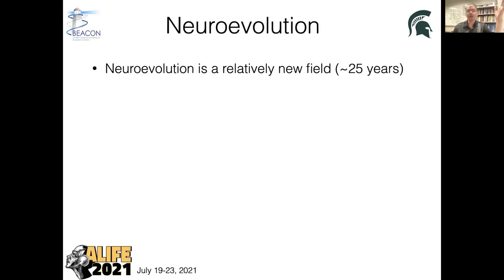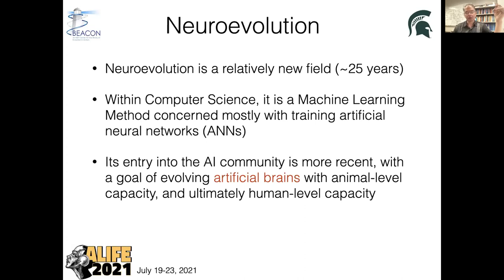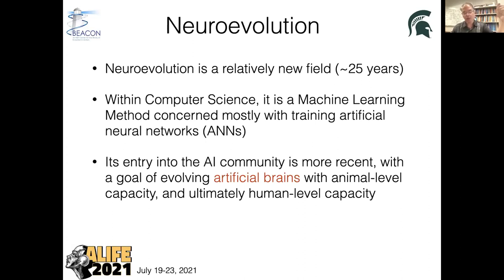Neuroevolution is a relatively new field, about 25 years old. Within computer science, it's a machine learning method concerned mostly with training artificial neural networks using neuroevolution techniques. But there's another usage of neuroevolution: an approach where you try to evolve artificial brains that have animal-level capacity, and ultimately human-level capacity. In other words, they're not so much geared towards classifying or generating images, but really trying to see whether evolution can do inside the computer what it has already done once before — giving rise to ours and other animals' brains.